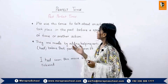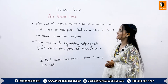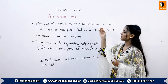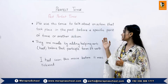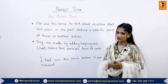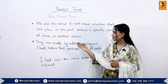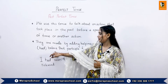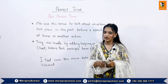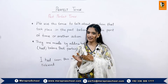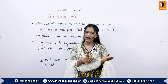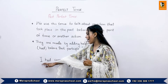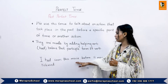Now we will talk about the detail of the past perfect tense. The past perfect tense is used to talk about an action that took place in the past before a specific point of time or another action. They are made by adding the helping verb had before the past participle form of the verb. The formation of the sentences is the same as the present perfect tense, only the helping verb is changed to had. For example: I had seen this movie before it was released.